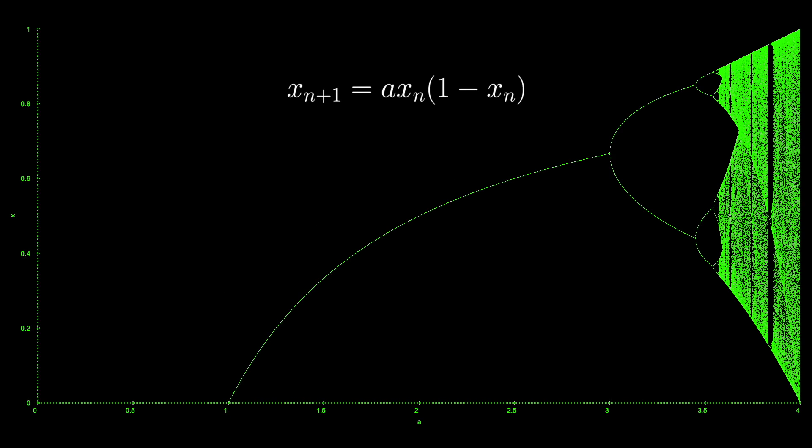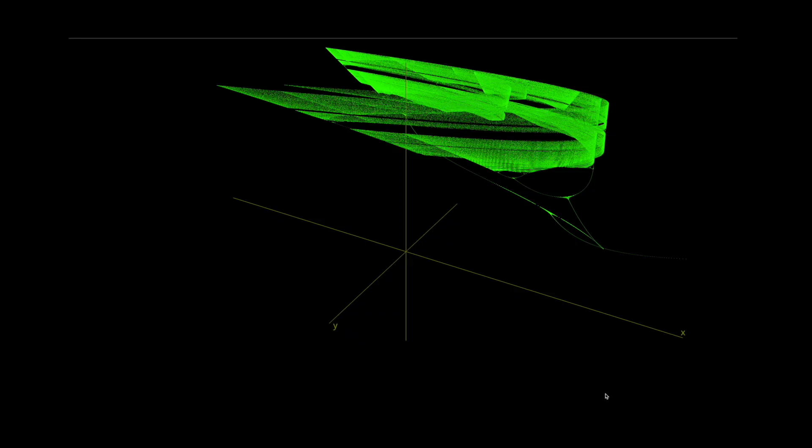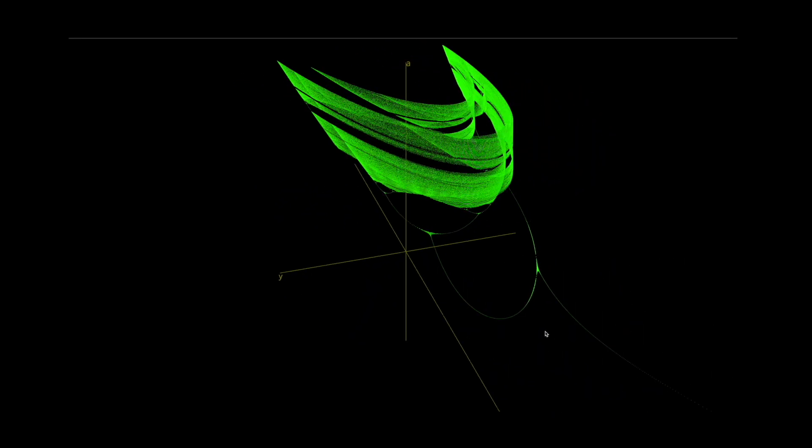For the logistic map, we plotted a bifurcation diagram that showed how the variable X changed for the different values of A, with fixed points, cycles, and chaos. For the Hénon map, we have two variables, X and Y. So we will need to make a three-dimensional plot. And here's the three-dimensional bifurcation diagram for parameter A, while B is held at 0.3.